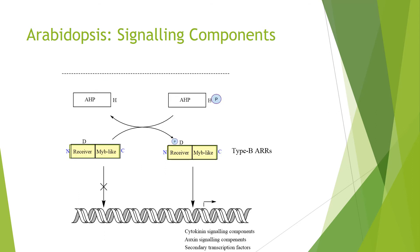Within the nucleus, there are also response regulators called ARRs. Type B ARRs contain an autoinhibitory receiver domain and a MYB-like DNA binding domain — they are transcription factors where the receiver domain normally inhibits the DNA binding activity.